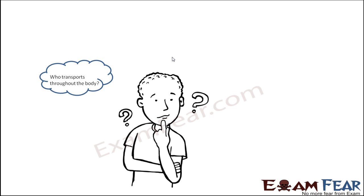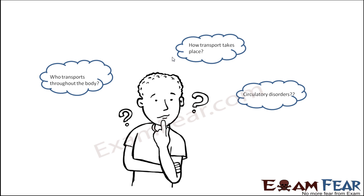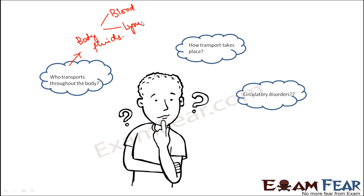There are three key questions: who transports throughout the body, how does the transport take place, and what disorders might occur if proper transportation does not happen? The answer to the first question is the body fluids. Fluids like blood and lymph flow from one part to another carrying all required substances. Blood is the best example, but lymph is another fluid that also helps in transporting substances.